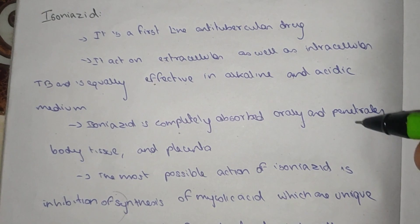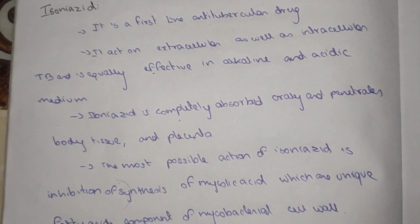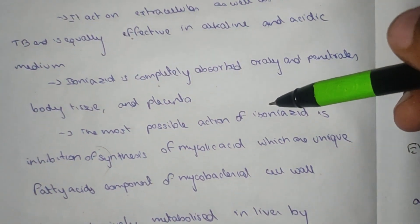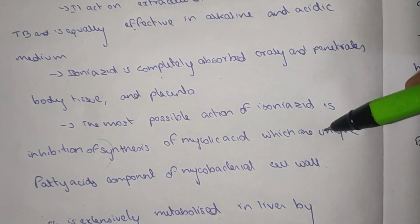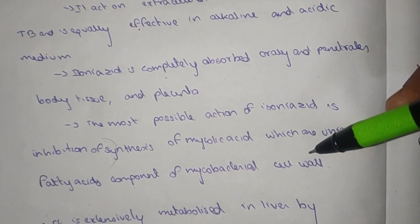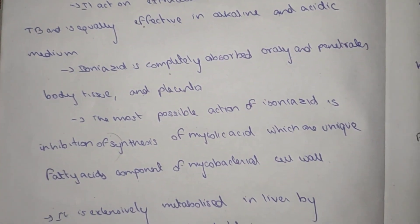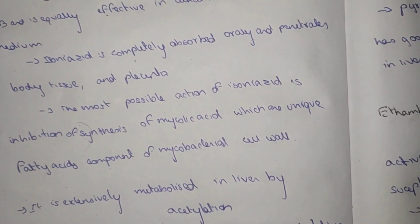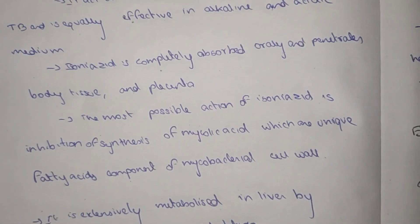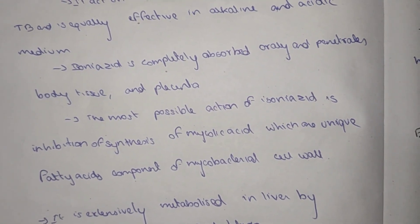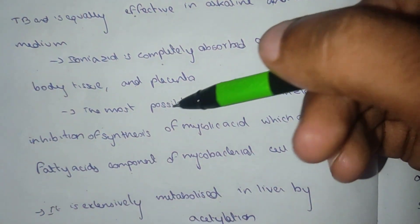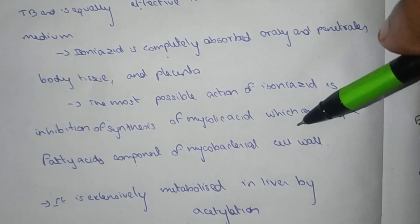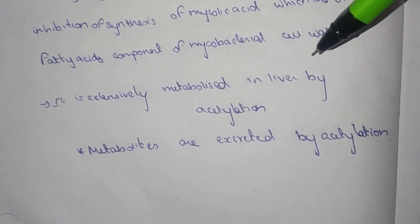Isoniazid is completely absorbed orally and penetrates into the body tissue and placenta. The most probable mechanism of action of Isoniazid is inhibition of mycolic acid, which is a unique fatty acid component of the mycobacterial cell wall. It is extensively metabolized in the liver by acetylation.